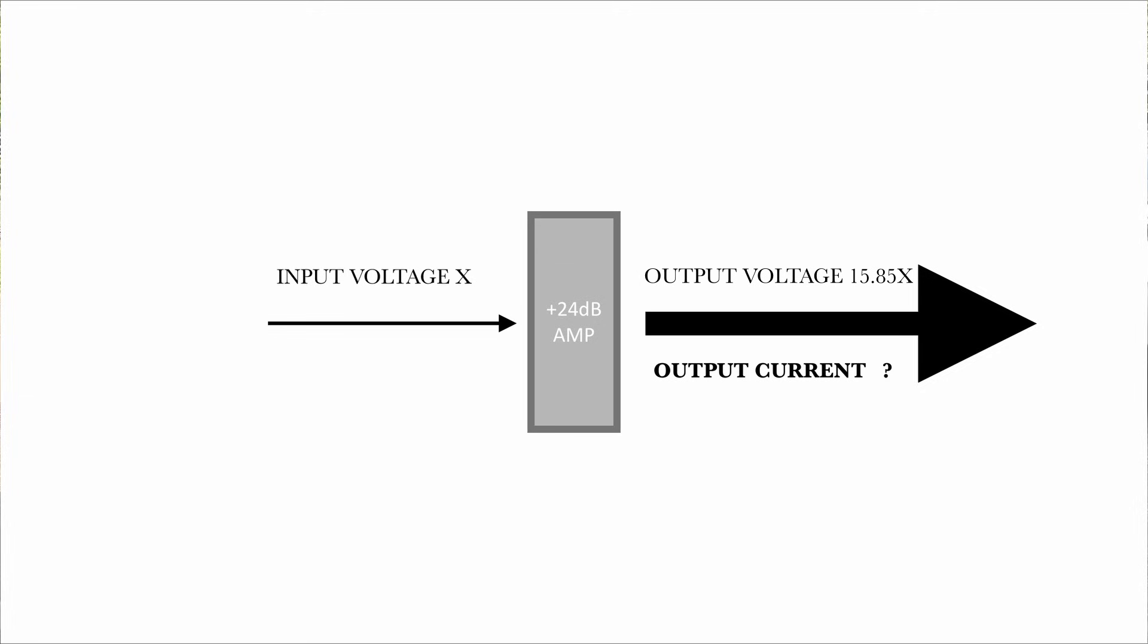The current also changes in accordance with the changes in the output voltage when we either change the input voltage level or the general gain level of the amplifier itself. This is because of Ohm's law that says that voltage equals the current times the resistance. So if the voltage stays the same and the resistance goes down because we added more speakers in parallel, the current goes up.